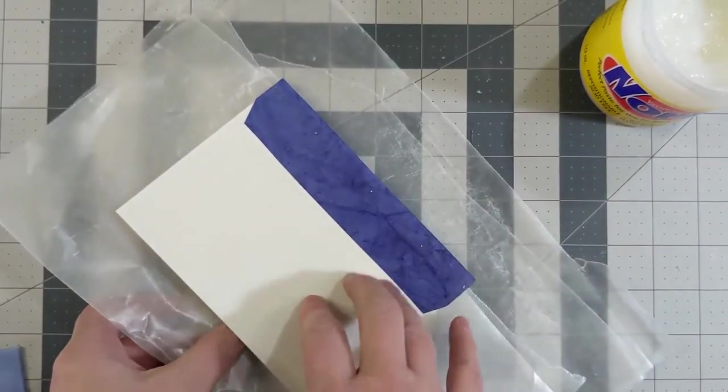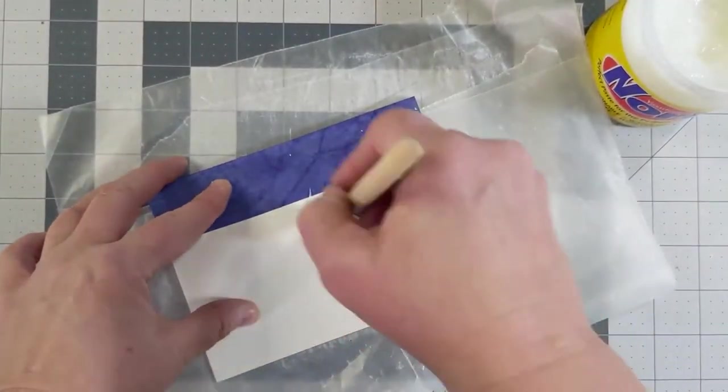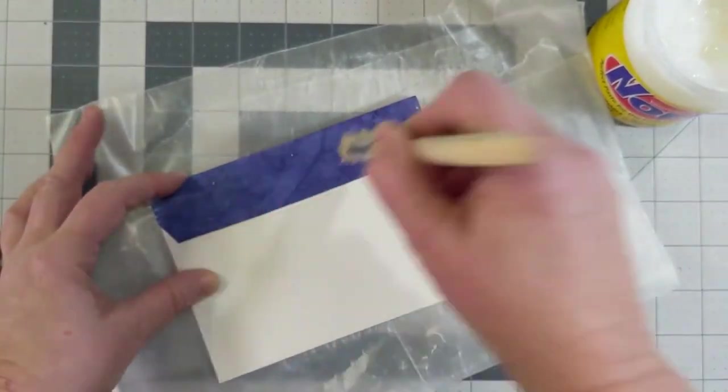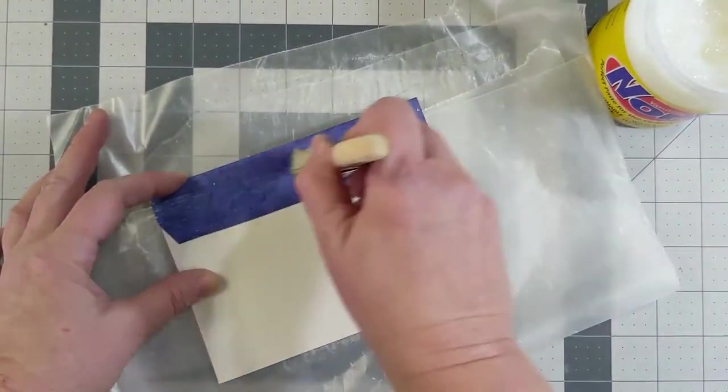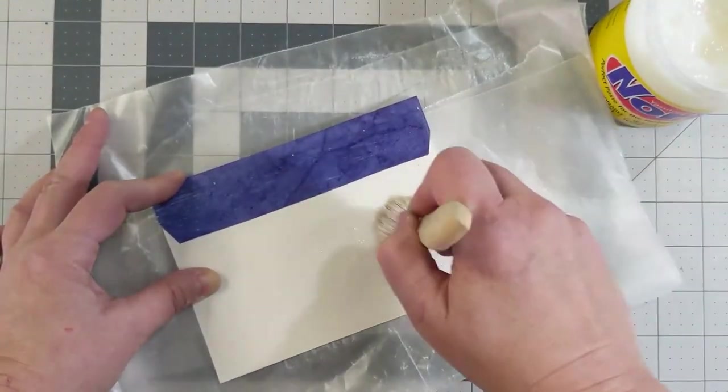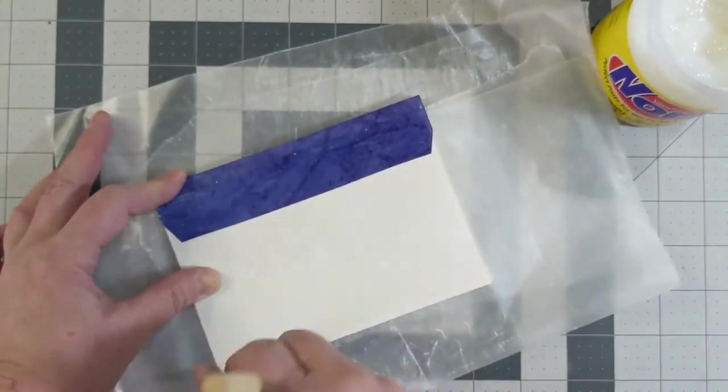Place a piece of waxed paper between the text block and the first page. Apply your paste to the page making sure that you don't get that quarter of an inch next to the spine. I like to use nori or wheat paste because it dries more slowly and if you make a mistake it's much more forgiving.